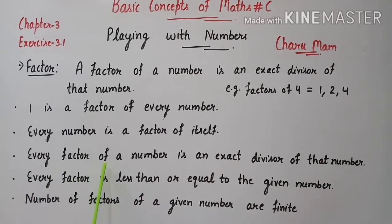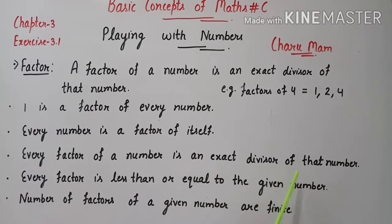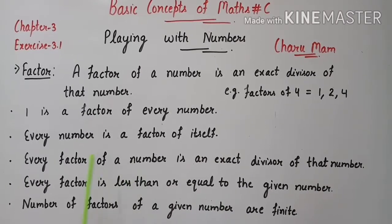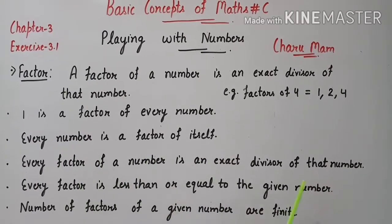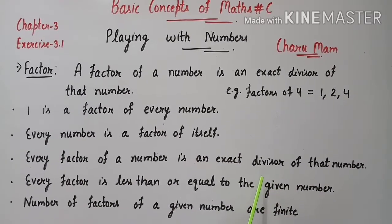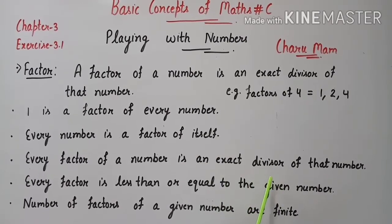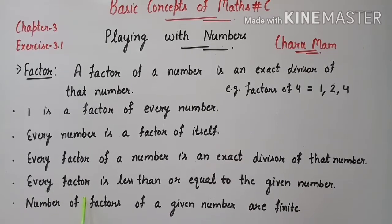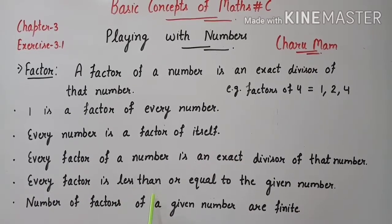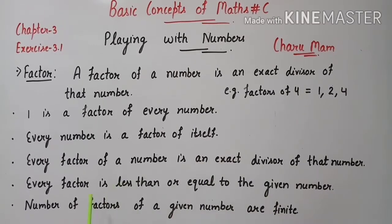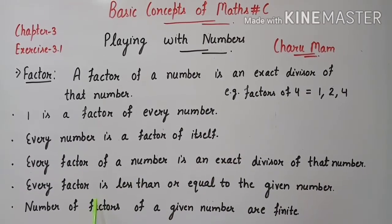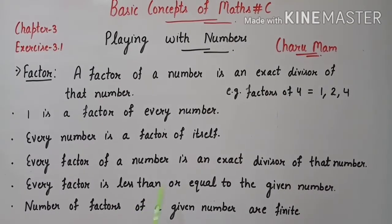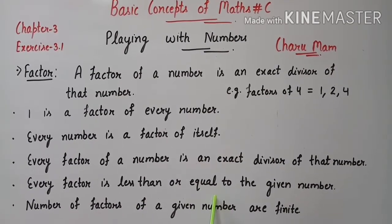Every factor of a number is an exact divisor of that number. Which means, if we find out the factors of any number, then it will be an exact divisor. Next: every factor is less than or equal to the given number. If we find out any number's factors, they will become less than or equal to it.